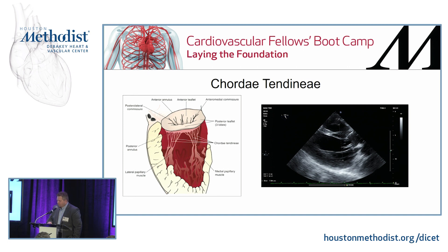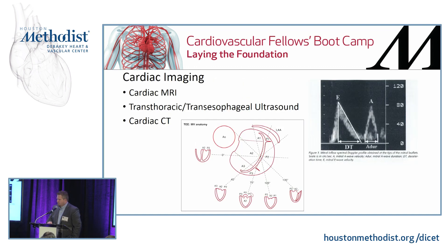The chordae tendineae are primarily composed of collagen with some elastin. They can stretch approximately 10 to 20 percent within the cardiac cycle but remain somewhat rigid and fixed, giving the mitral valve structural support during the relaxation phase. Imaging of the mitral and aortic valves includes transthoracic echocardiography, transesophageal echocardiography, cardiac MRI, cardiac CT, and occasionally other modalities. We'll talk more about these throughout the course of the day.